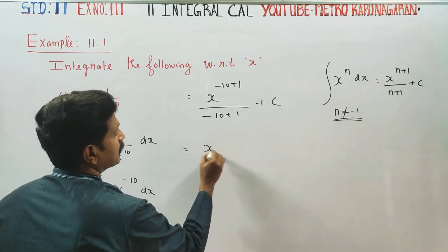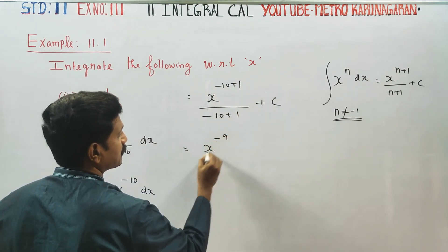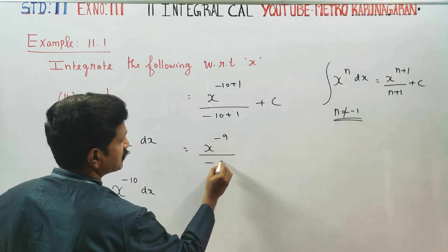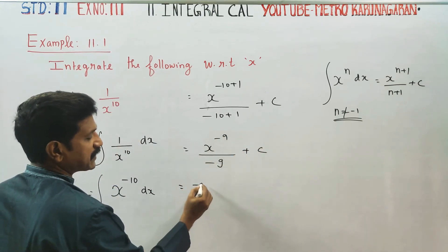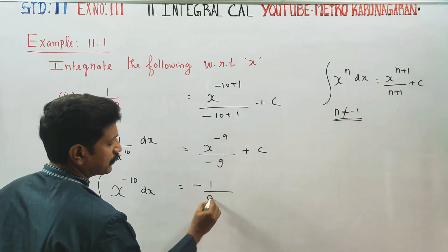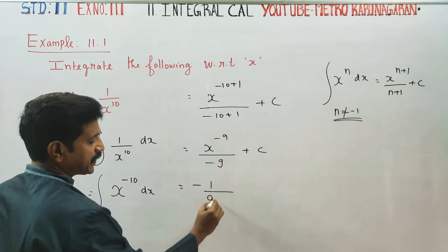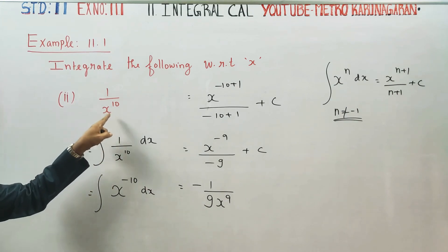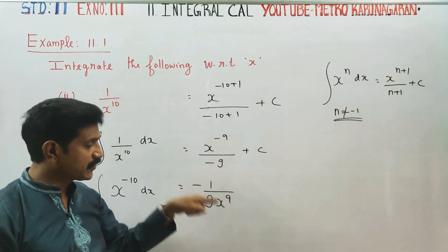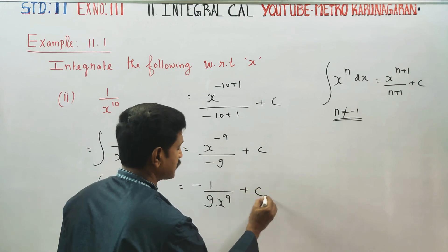x power minus 10 plus 1 is x power minus 9. Minus 10 plus 1 equals minus 9. So we have x power minus 9 over minus 9, plus c.